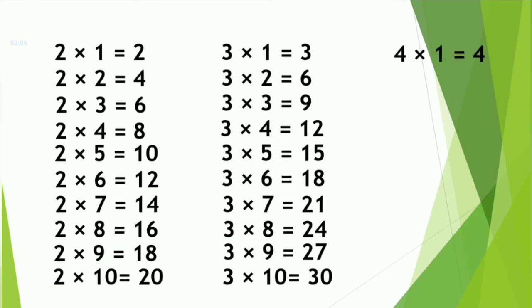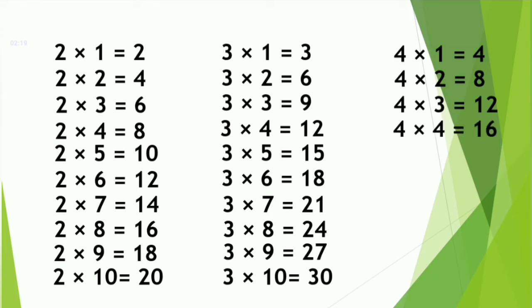Four ones are four. Four twos are eight. Four threes are twelve. Four fours are sixteen. Four fives are twenty.